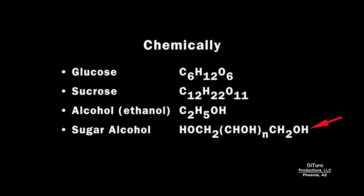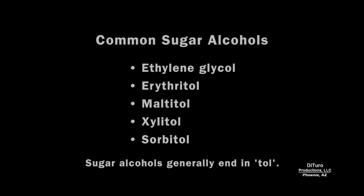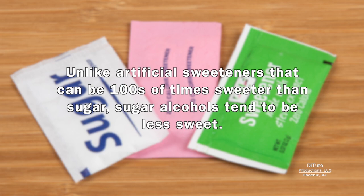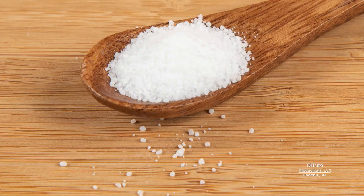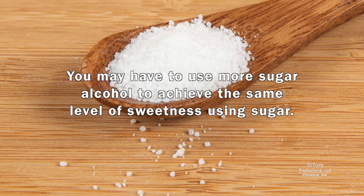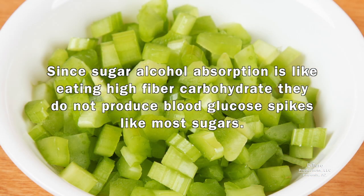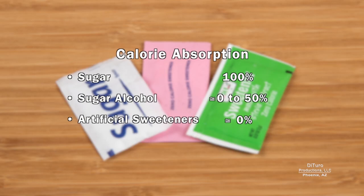Sugar alcohols have a more complex chemical structure than sugar and alcohol. Sugar alcohols can usually be identified by the "-tol" ending. Unlike artificial sweeteners that can be hundreds of times sweeter than sugar, sugar alcohols tend to be less sweet. Unlike artificial sweeteners, some sugar alcohols are approved for cooking and baking, but you may have to use more sugar alcohol to achieve the same level of sweetness as sugar. Since sugar alcohol absorption is like eating high-fiber carbohydrates, they do not produce blood glucose spikes like most sugars. But that does not mean that sugar alcohols are zero calorie like artificial sweeteners.